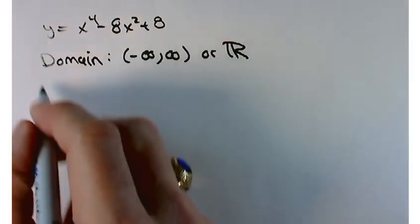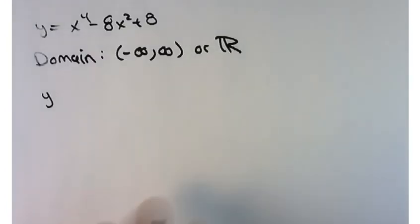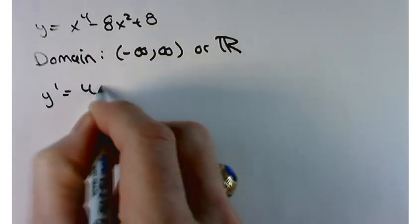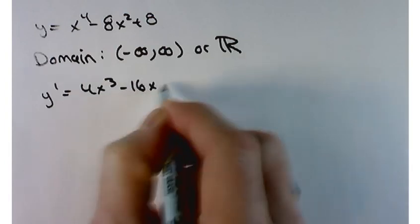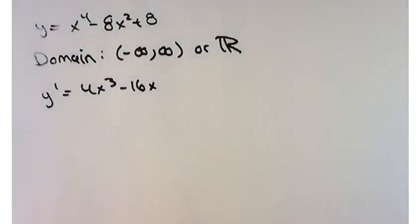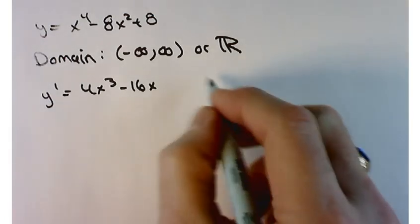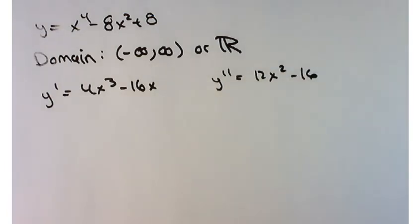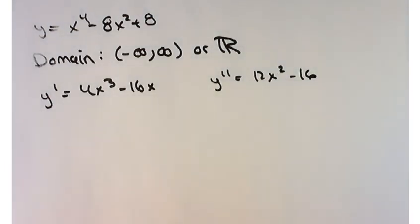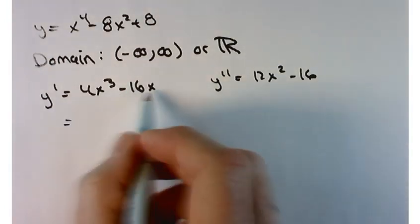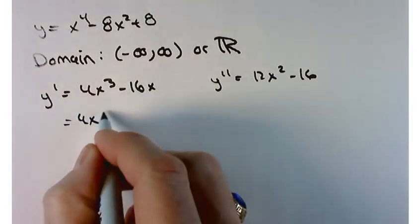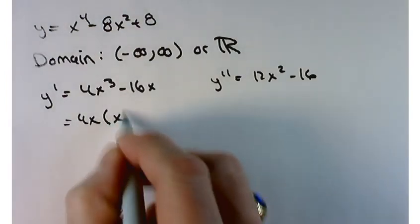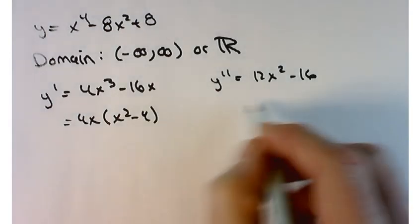Let's look at the derivative, because it's going to tell us a lot about our function. y prime is 4x cubed minus 16x, and y double prime is 12x squared minus 16. With respect to both of these, I'd like to know where they're each zero so I can determine where they're going to change signs. Let's factor: I can factor out a 4x, leaving x squared minus 4.